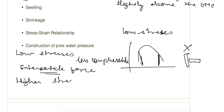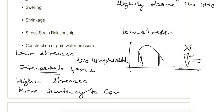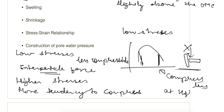if stresses are higher such that the flocculated structure is broken, then the dry side of optimum has a greater tendency to compress. So it will compress more than the wet side of optimum. The wet side will compress less at higher stresses.